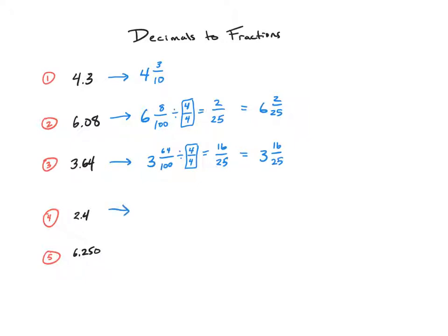On number four, we have two and four-tenths. Two and four-tenths is not in simplest form because four and ten both share a common factor of two. Four divided by two is two. Ten divided by two is five. So, two and four-tenths is the same thing as two and two-fifths.